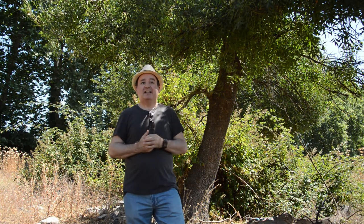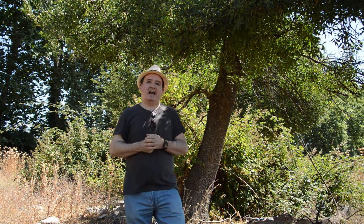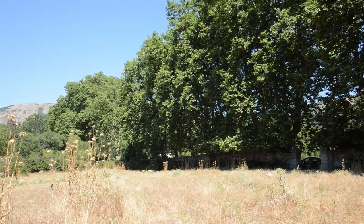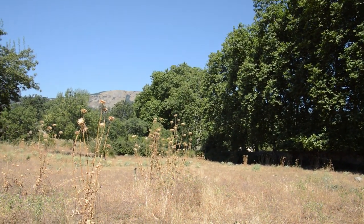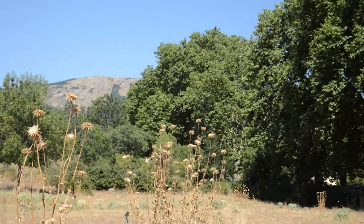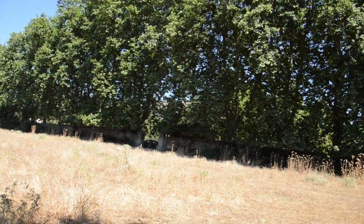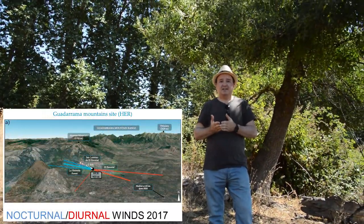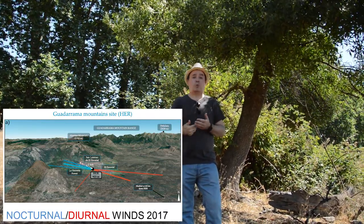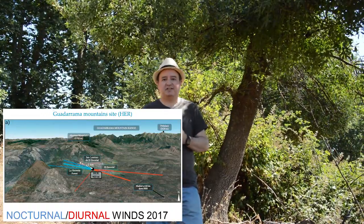Why is this place interesting for studying turbulence and mountain breezes? Because we have a very clear local slope — the Avantos mountain — and a very clear wind direction during the night and a different direction during the day. These are called thermally driven flows: the difference in temperature between the slope and the surrounding air creates pressure differences that generate winds. During the night, cold winds come down slope from the northwest, while during the day the opposite direction comes from the southeast.